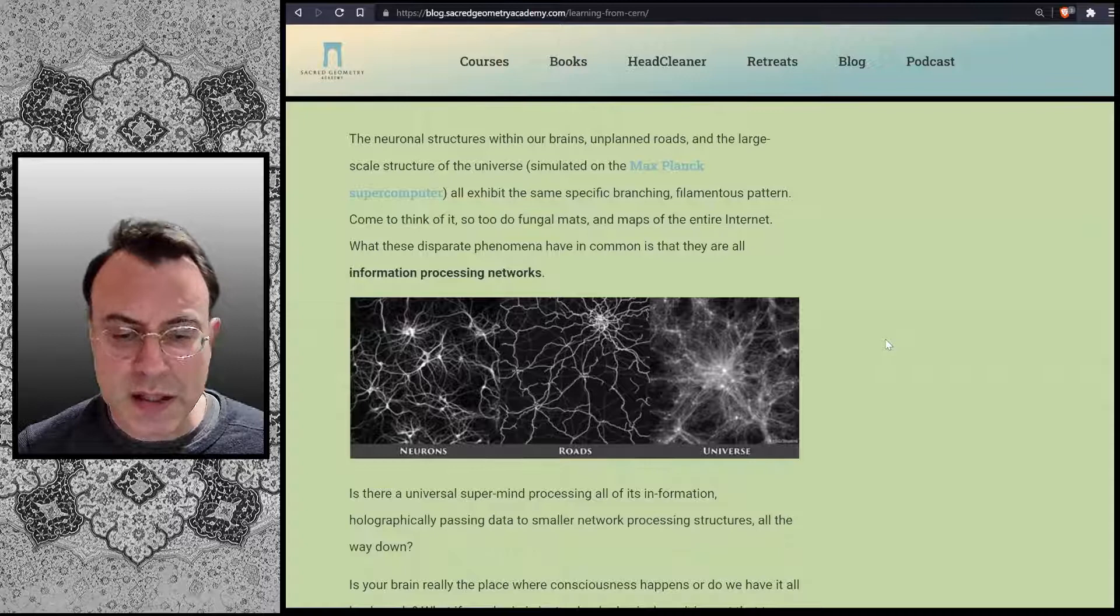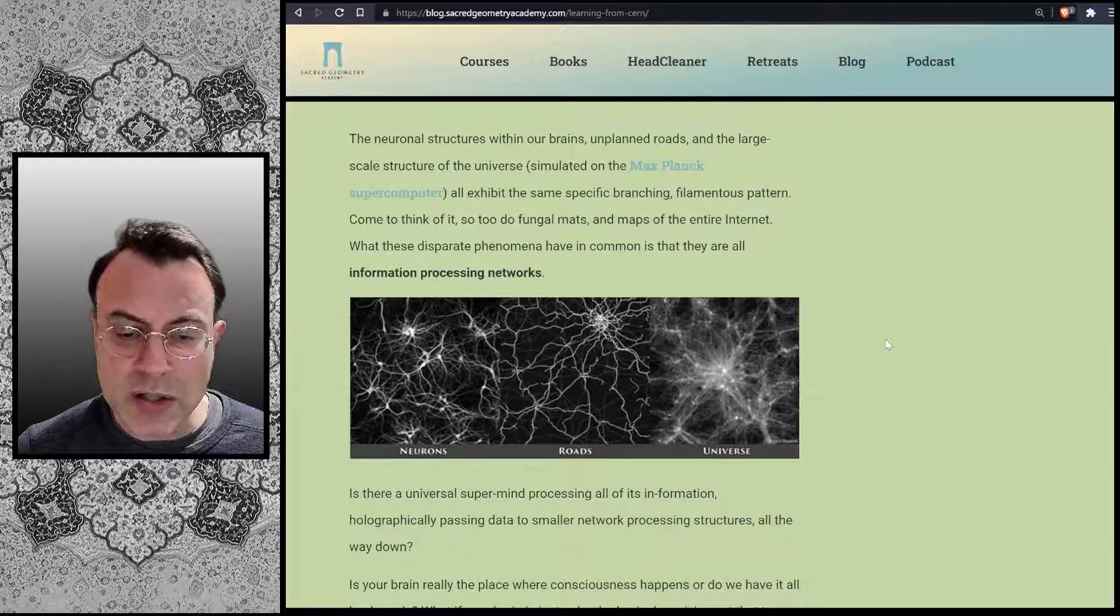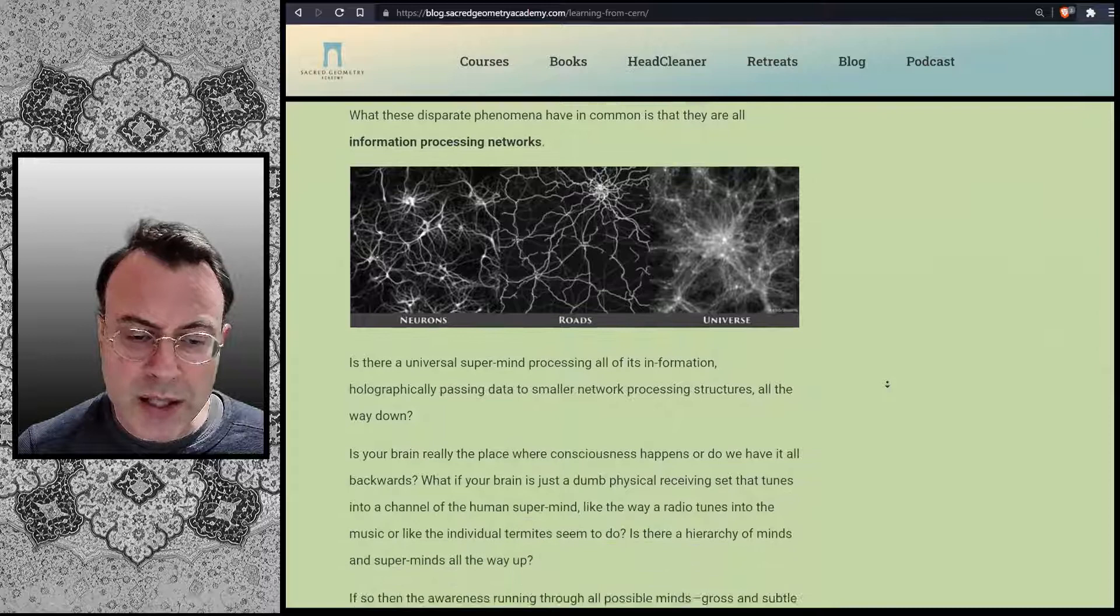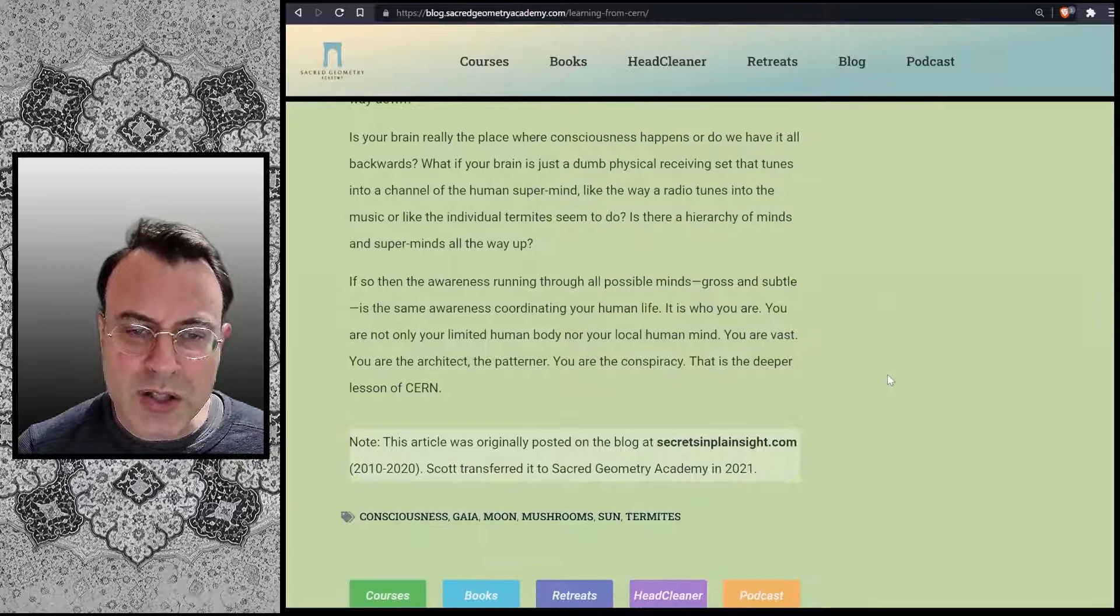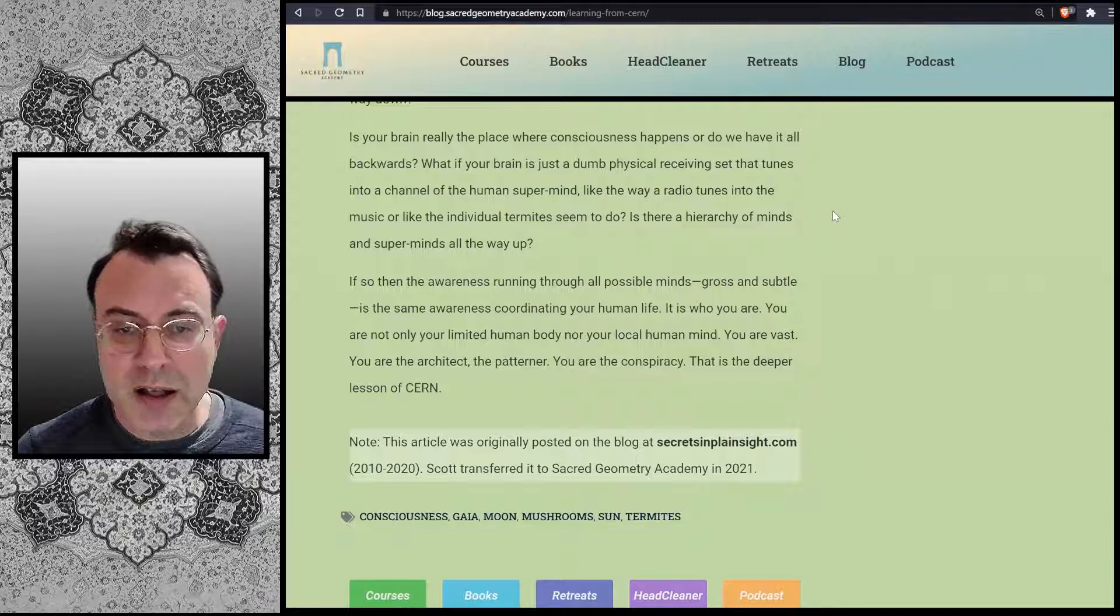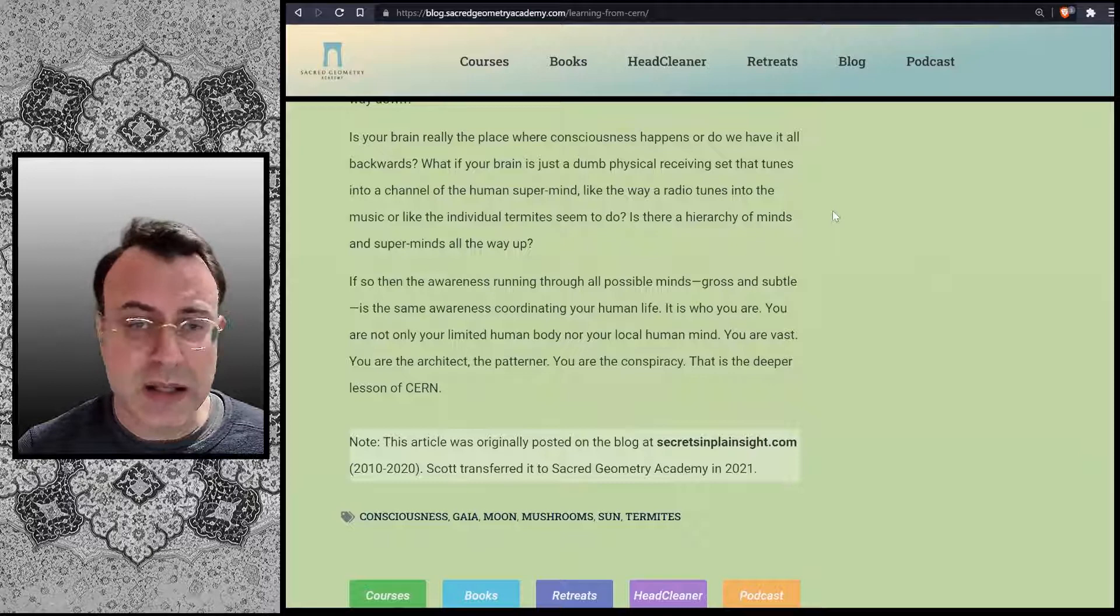Is there a universal supermind processing all of its information, holographically passing data to smaller network processing structures all the way down? Is your brain really the place where consciousness happens, or do we have it all backwards? What if your brain is just a dumb physical receiving set that tunes into a channel of the human supermind, like the way a radio tunes into the music, or like the individual termites seem to do?